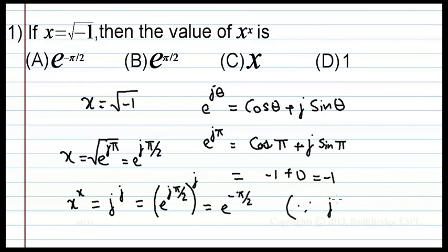Since j square equal to minus 1, therefore the answer is minus pi by 2. Therefore option A is correct.